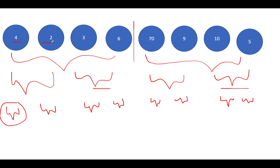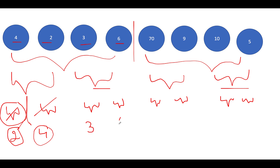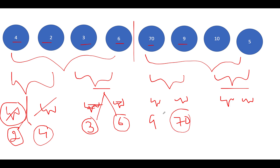Now we merge back up. When we merge 4 and 2, the sorted result is 2, 4. For 3 and 6, they stay as 3, 6. For 70 and 9, sorted gives 9, 70. For 10 and 5, sorted gives 5, 10. These pairs have been sorted while traversing back up the recursion tree.